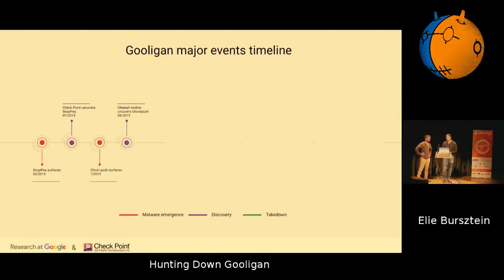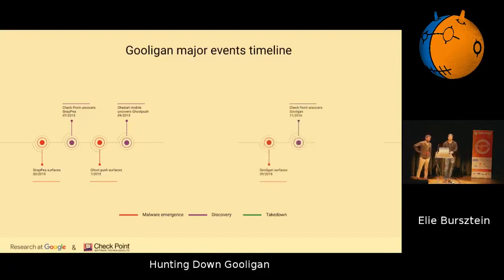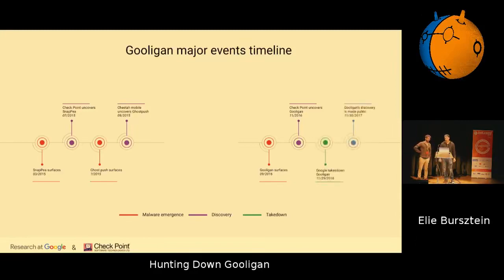A few months after that, a company called Cheetah Mobile uncovered a large malware family called Ghost Push. Ghost Push innovated in the space of Android malware by providing persistency across reboots, but also flash — they would patch the recovery system to enable persistence through resetting the default system settings. Then a year after that, Gooligan surfaced, again discovered by Checkpoint. Gooligan innovated because they are using OAuth tokens to do fraudulent abuse. A few days after it was discovered and we started collaborating with Checkpoint, we were able to take down Gooligan.